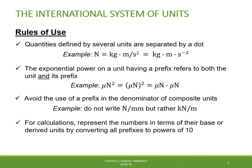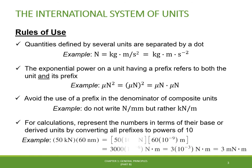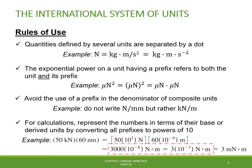The fourth rule establishes that when performing calculations, we should represent numbers in terms of their base or derived units by converting all prefixes to powers of 10. For example, when multiplying 50 kilonewtons by 60 nanometers, we should first convert the units to their base units, perform the multiplication, and represent the final result in terms of a single prefix. It's best to keep this numerical value between 0.1 and 1000; otherwise a suitable prefix should be used.